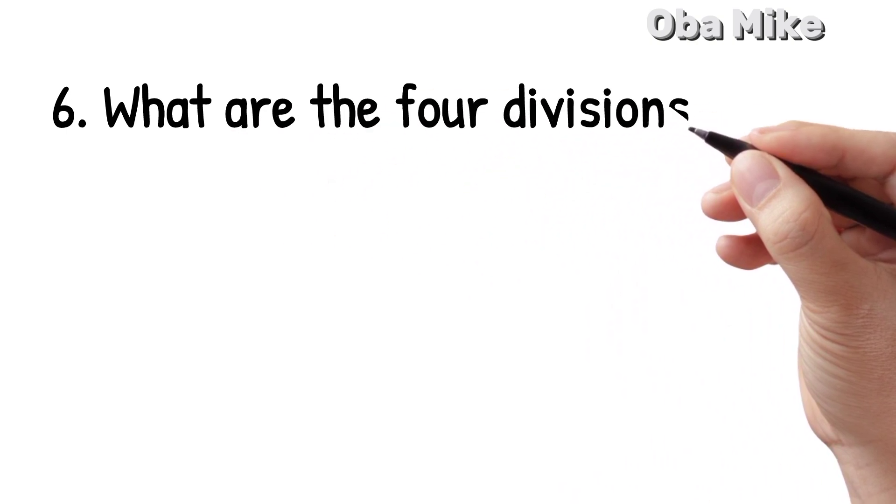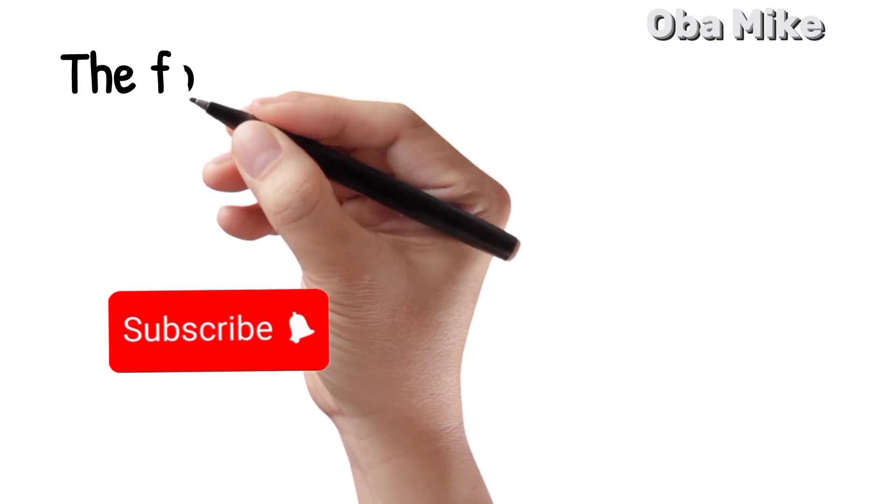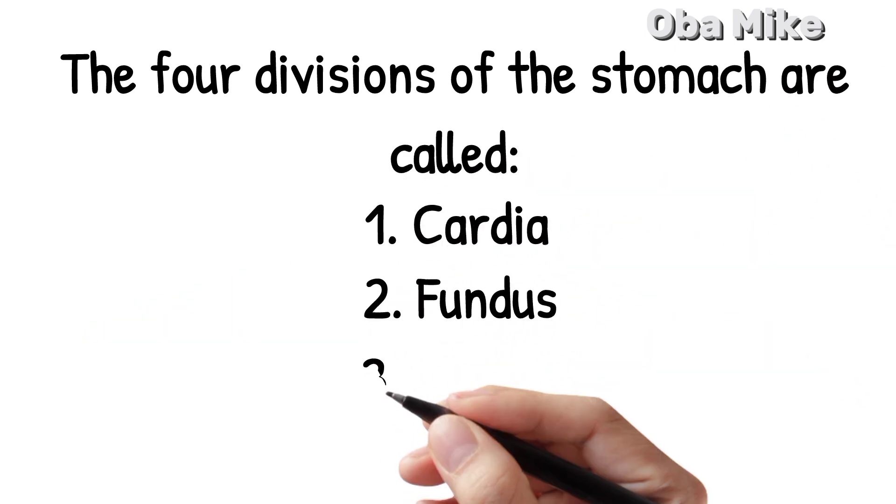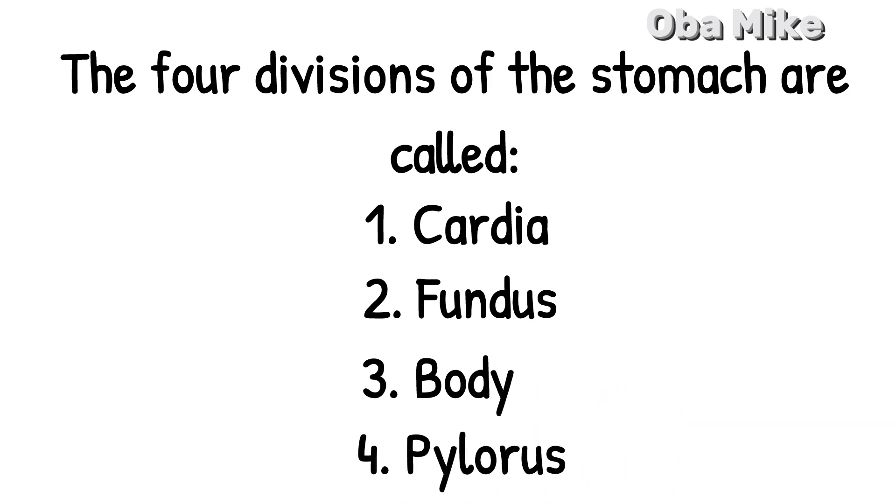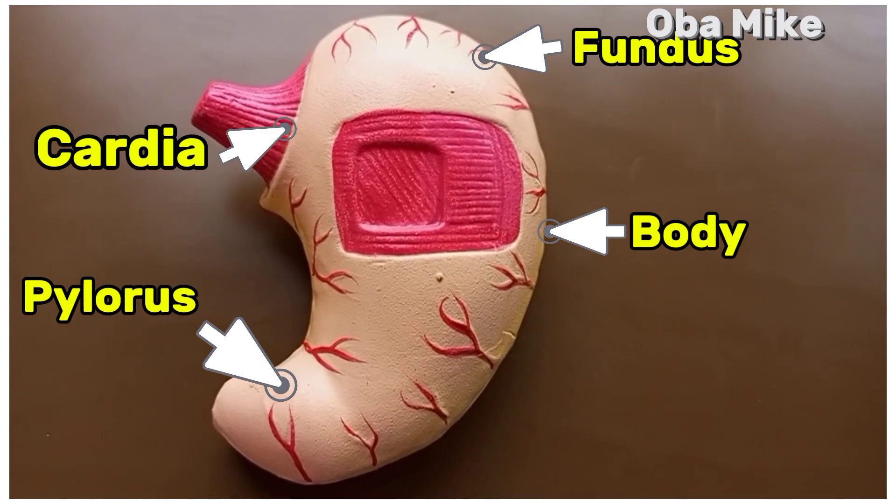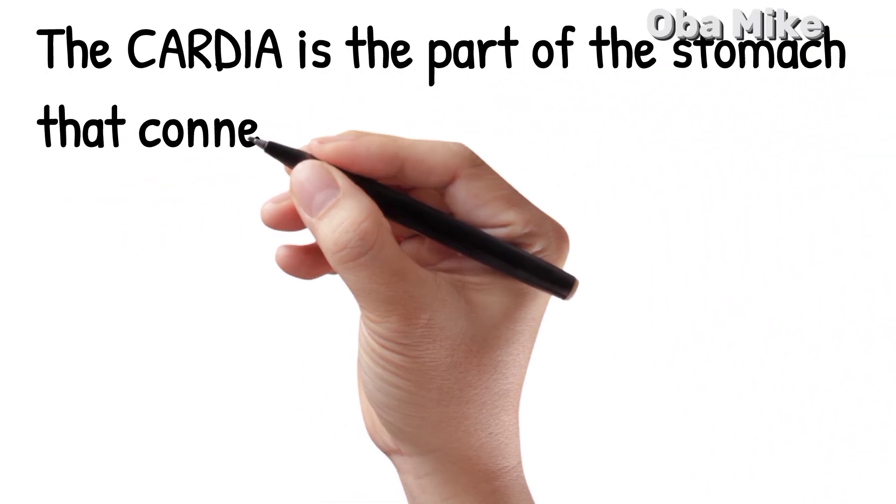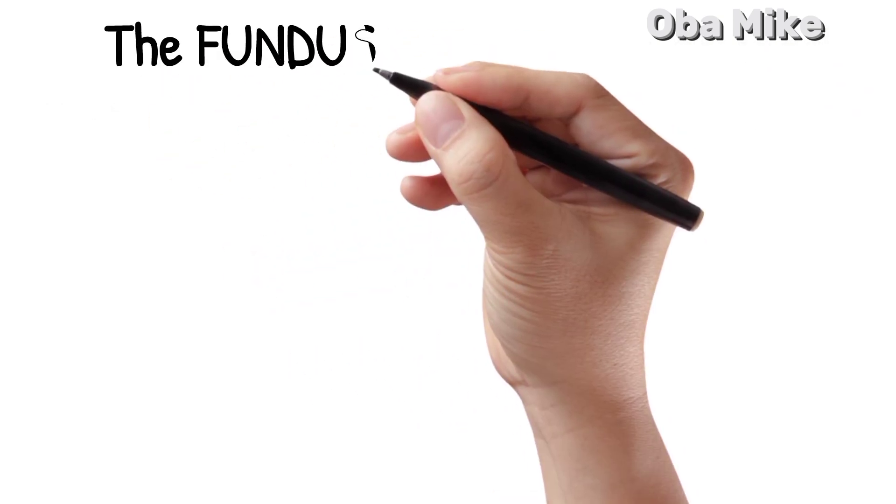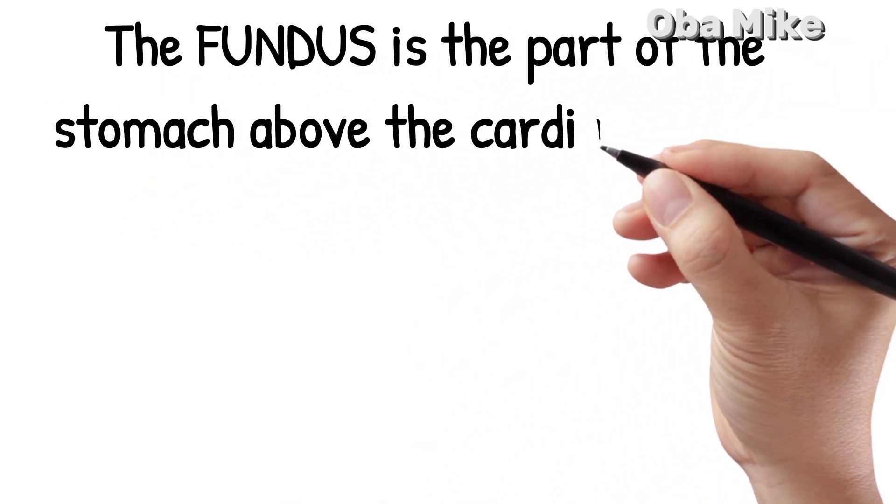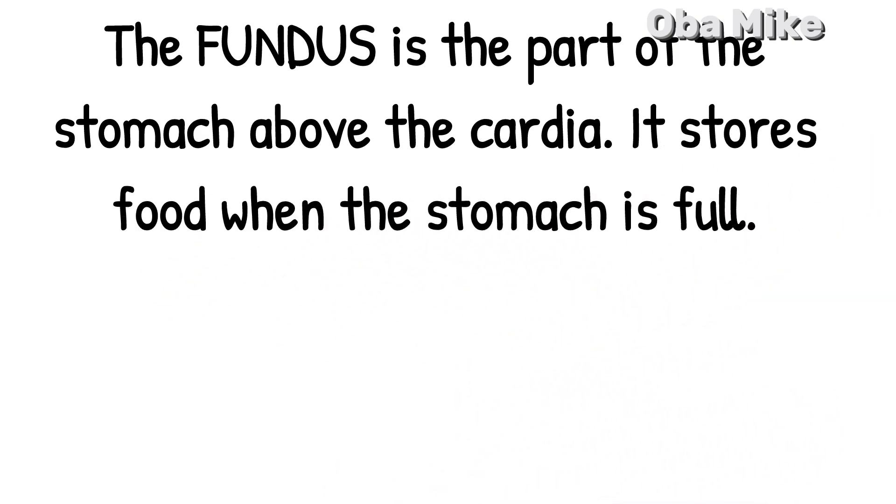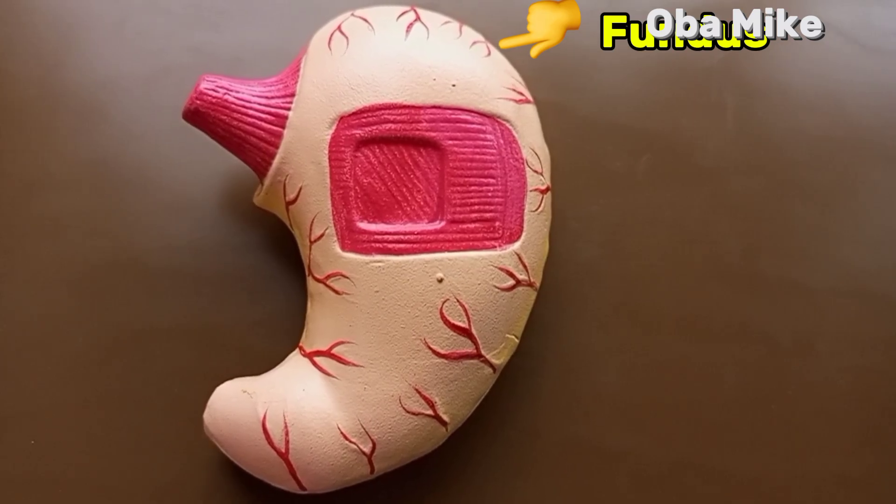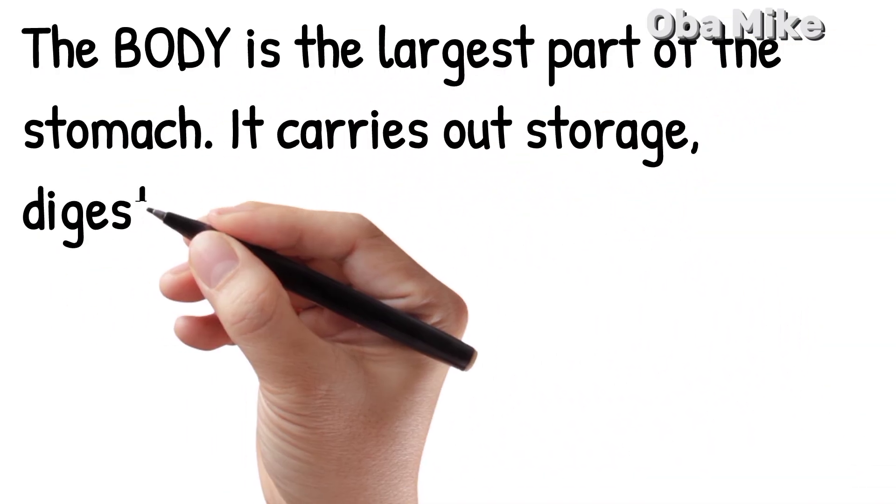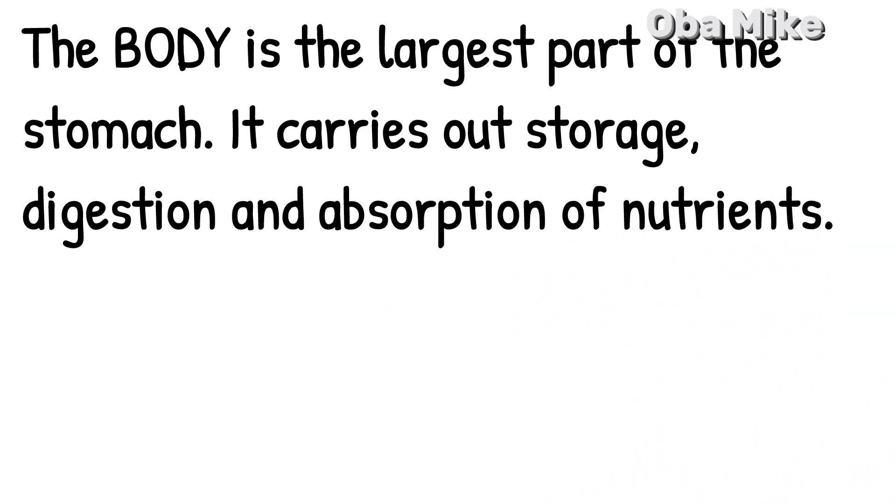Number 6. What are the four divisions of the stomach? The four divisions of the stomach are called cardia, fundus, body, and pylorus. The cardia is the part that connects to the esophagus. The fundus is the part above the cardia that stores food when the stomach is full. The body is the largest part of the stomach. It carries out storage, digestion, and absorption of nutrients.